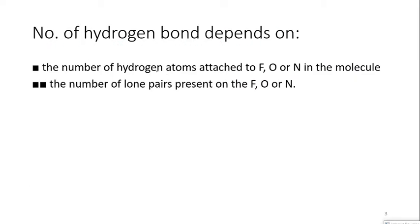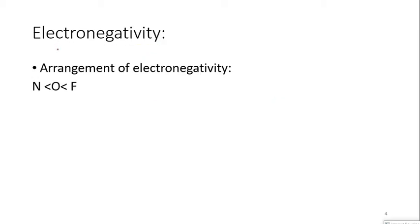The number of hydrogen bonds depends on the number of attached nitrogen, fluorine, or oxygen atoms of the molecule — specifically, the number of lone pairs present on oxygen, fluorine, or nitrogen will decide the number of hydrogen bonds. The electronegativity of the three elements — nitrogen, oxygen, and fluorine — decides the strength of the hydrogen bond. Nitrogen has the least electronegativity compared to oxygen and fluorine.